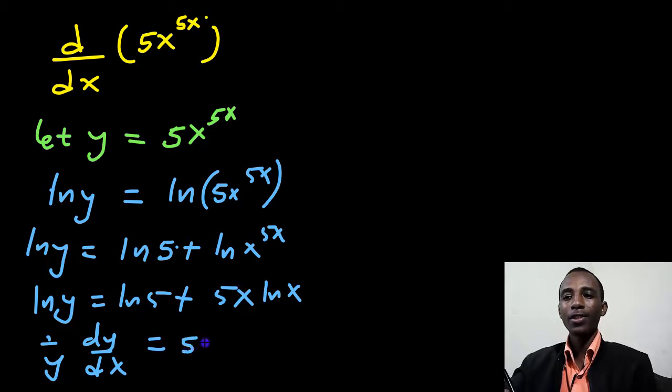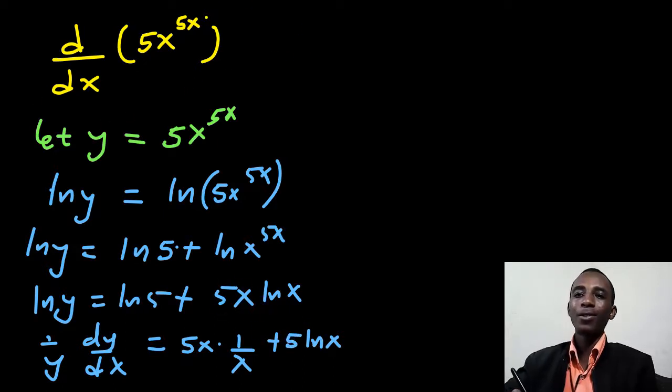So just write 5x. If I keep that constant, the derivative of natural log of x is 1 over x plus, if I keep natural log of x constant, the derivative of 5x is just a 5. So we're almost there.